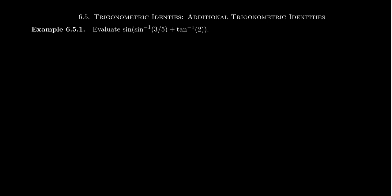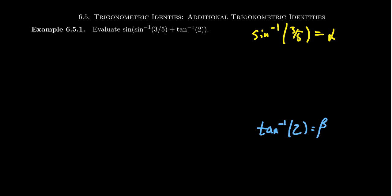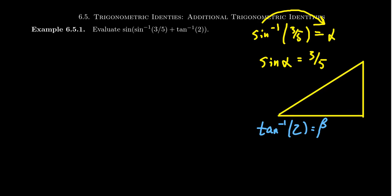We usually like to use Greek letters to help us with angles. So think of sine inverse of three-fifths — we're going to call that alpha. And when you see tangent inverse of two, think of it as some other angle beta. With sine inverse of three-fifths, by the inverse function property, we can move the sine inverse to the other side and it becomes a sine. We get sine of alpha equals three-fifths. With this, we draw a right triangle: opposite is three, hypotenuse is five, and by the Pythagorean relationship, the adjacent side is four.